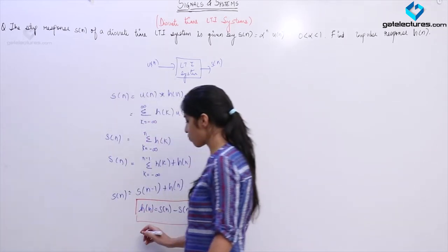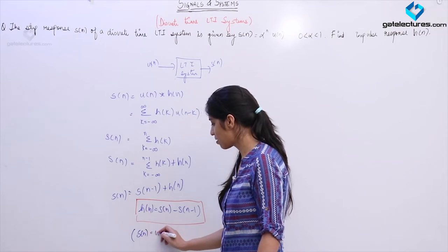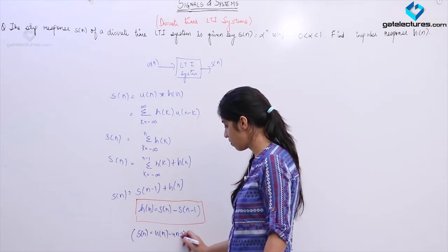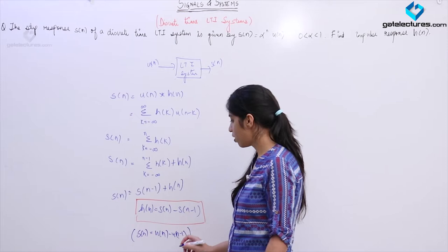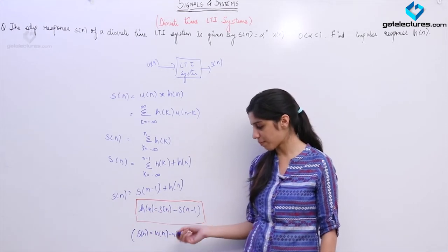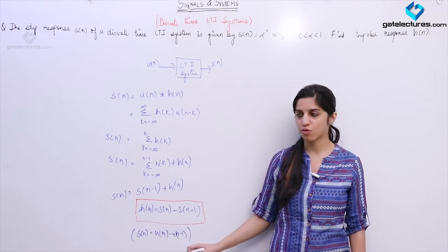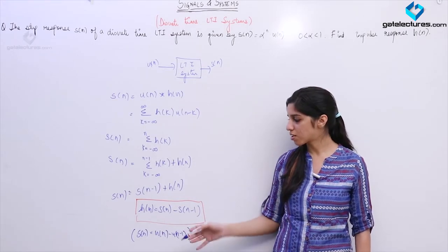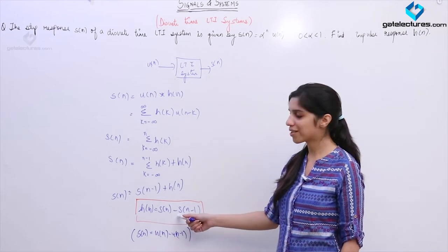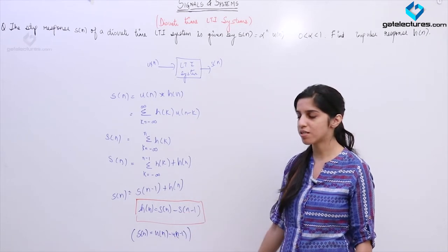This can also be seen from the equation: since delta(n) equals U(n) minus U(n minus 1), therefore the response of delta(n), which is H(n), is going to be S(n) minus S(n minus 1). We could have seen this from that equation also. So this is how we can obtain the impulse response of a system using its step response.